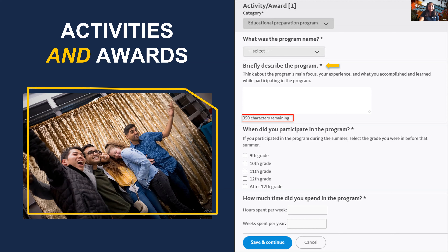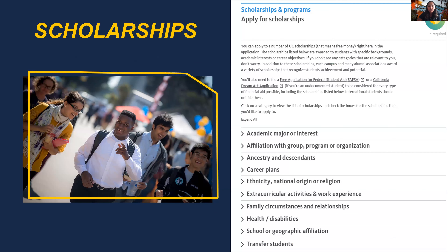In the scholarship section, all UC campuses offer scholarships for students who meet certain criteria. Applicants should review each scholarship choice and select all that match their characteristics, interests, and background. There is no limit to the number of scholarships a student can select. We encourage students to research other campus-based scholarships using the link provided at the bottom of the screen.